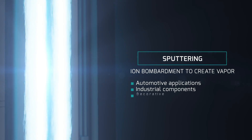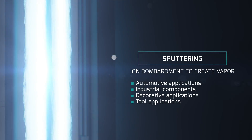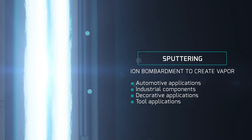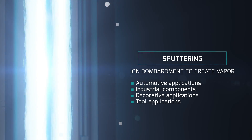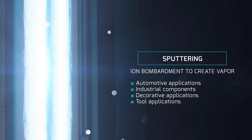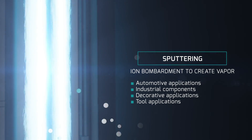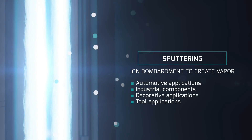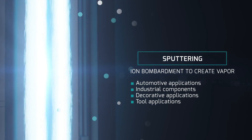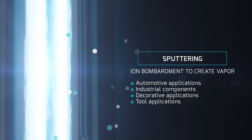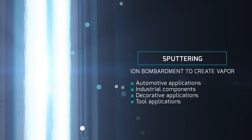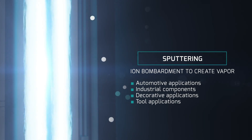With magnetron sputtering, positively charged inert gas ions bombard the cathode target, which is at a negative potential. Due to this energetic bombardment, atoms can break free from the target. A magnetic field is used to create more gas ions and improve the efficiency of the cathode.